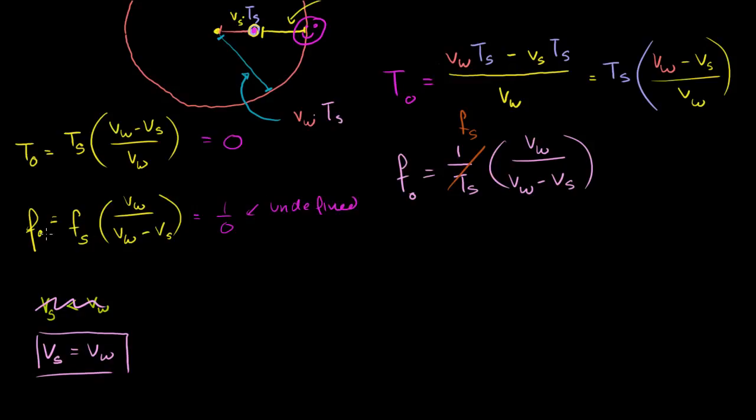But if you want to think about what the frequency approaches as the velocity of the source approaches the velocity of the wave—if this thing is only a little bit less than that thing—this is going to be a very small positive number. So when you divide these quantities by that very small positive number, you're going to approach infinity.